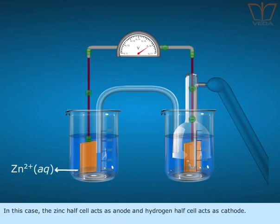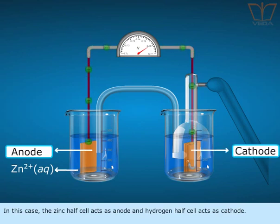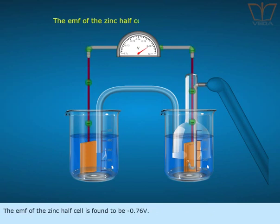In this case, the zinc half cell acts as anode and hydrogen half cell acts as cathode. The EMF of the zinc half cell is found to be minus 0.76 volt.